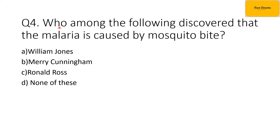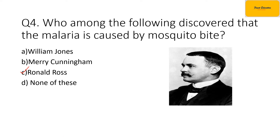The fourth question is: who among the following discovered that malaria is caused by mosquito bite? The options are A, William Jones; B, Mary Cunningham; C, Ronald Ross; or D, none of these. The correct option is option C, Ronald Ross. Ronald Ross discovered that malaria is caused by mosquito bite, and here you can see his picture in the image.